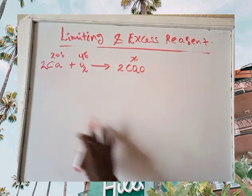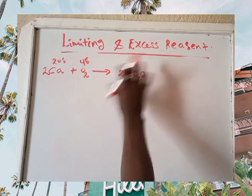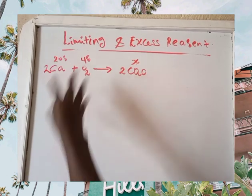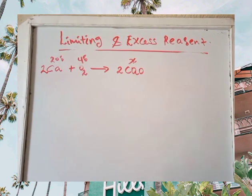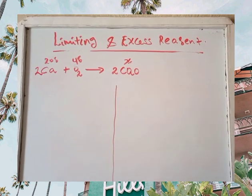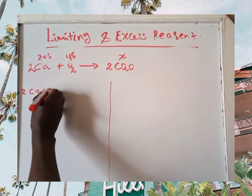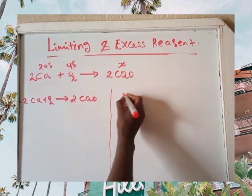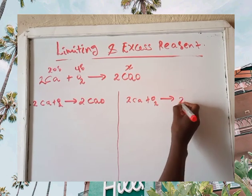So 20 grams of calcium metal and 4 grams of oxygen — how many grams of calcium oxide? To determine which one is the limiting reagent and which one is the excess reagent, you have to write two separate calculations from the chemical equation: 2 moles of calcium metal react with oxygen to give 2 moles of calcium oxide.